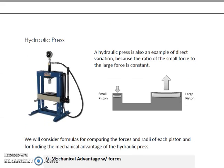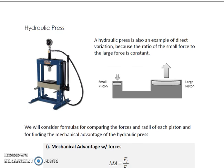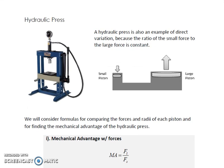A hydraulic press is also an example of direct variation because the ratio of the small force to the large force in a hydraulic press is constant. We'll consider formulas for comparing the forces and radii of each piston and for finding the mechanical advantage of the hydraulic press.